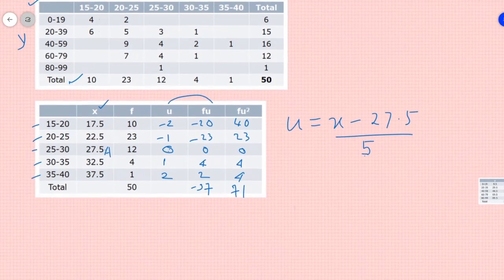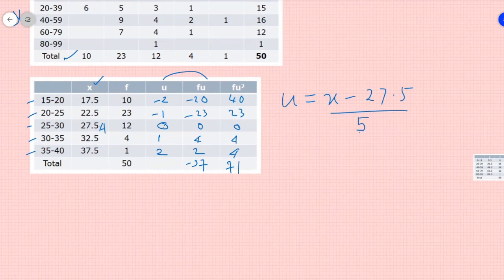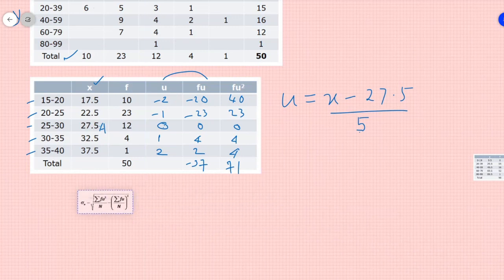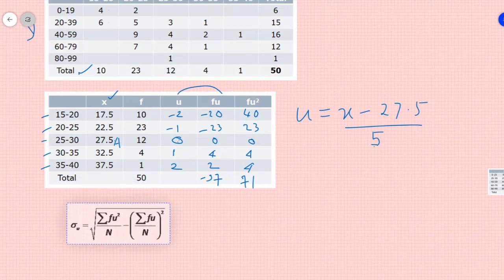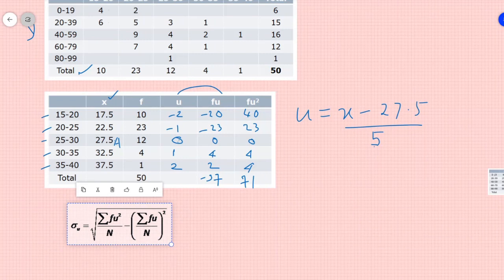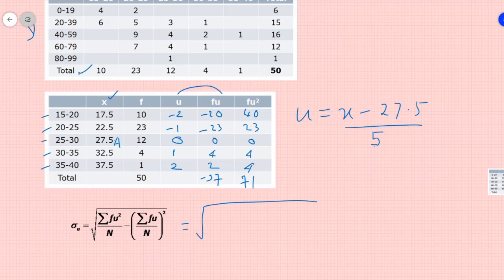So now let us calculate the standard deviation of u. We will substitute the values and we will get sd of u is summation fu square 71 by 50 total frequency minus of minus 37 by 50 whole square. Now, I will solve this. I will get this as 0.93. So I have sd of u with me.